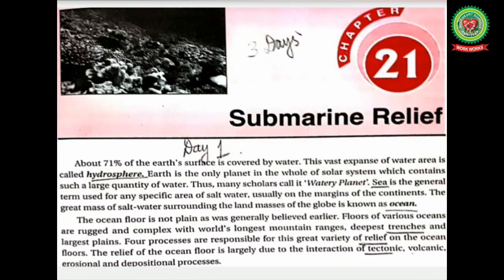About 71% of the earth's surface is covered by water. This vast expanse of water is called the hydrosphere. Earth is the only planet in the solar system which contains such a large quantity of water, so many scholars call earth a watery planet. Sea is the general term for a specific area of salt water usually on the margins of continents. The ocean floor is not plain as was generally believed earlier — oceans are rugged and complex.